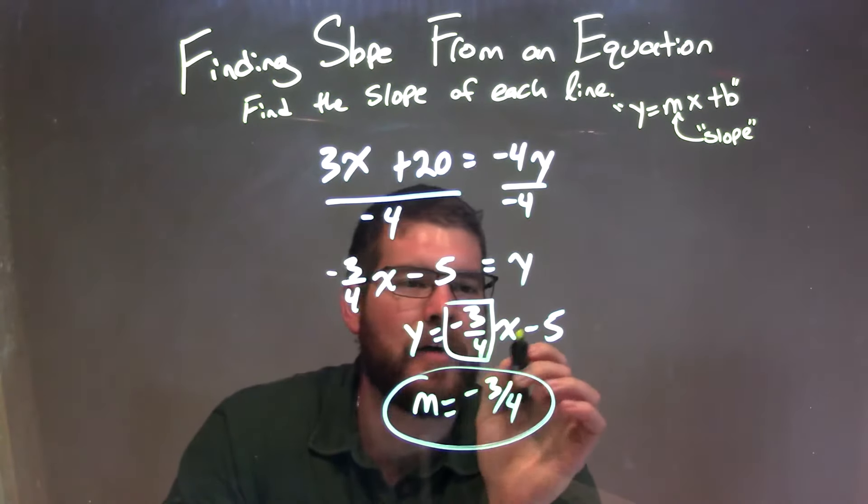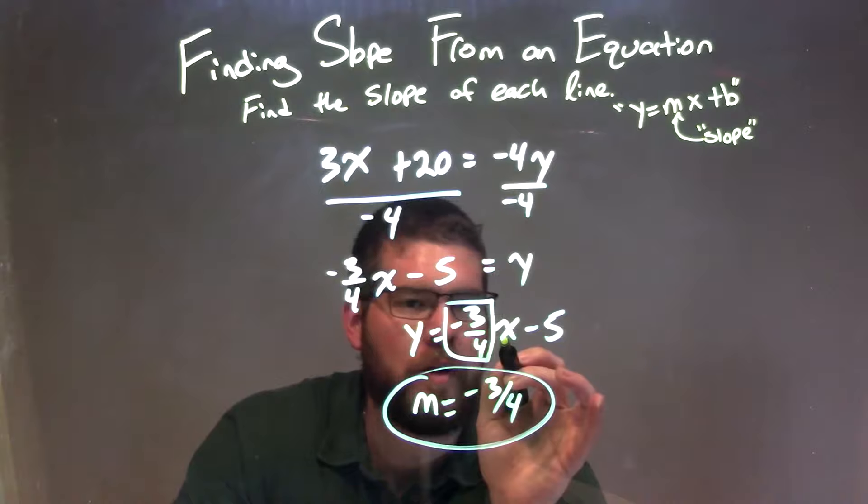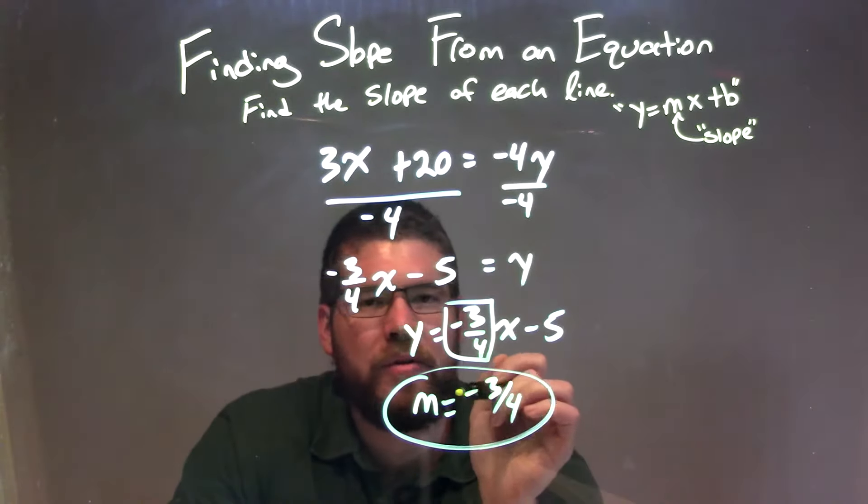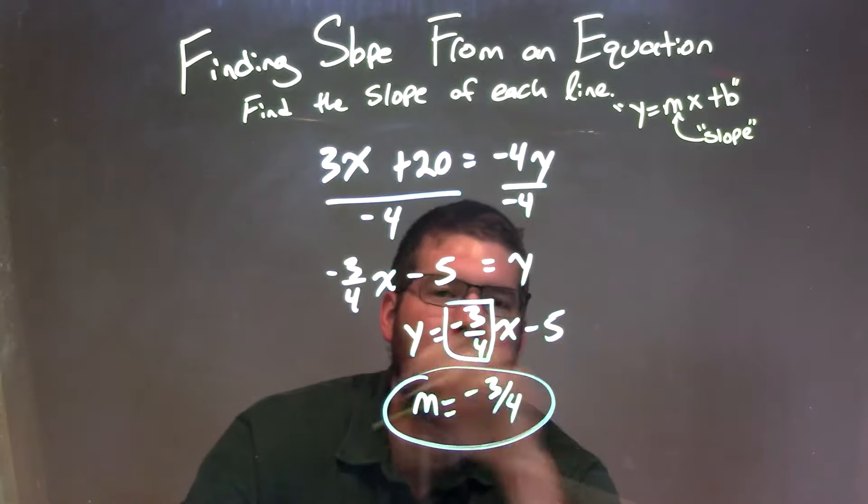y equals mx plus b. m being negative 3 fourths, which is the coefficient in front of x. So I wrote it down here below. And so our final answer for slope is m equals negative 3 fourths.